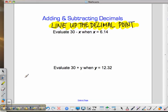Now, evaluate 30 minus x when x is 6 and 14 hundredths. So, 30 minus 6 and 14 hundredths. Again, lining up the decimal point.